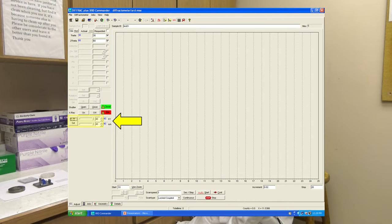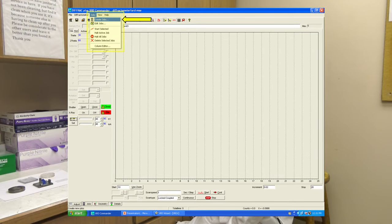Next, the current is increased at 5 milliamp intervals in the same manner. After the target power has been achieved, the user can set up the next scan by clicking on the Jobs drop-down menu and selecting Jobs.